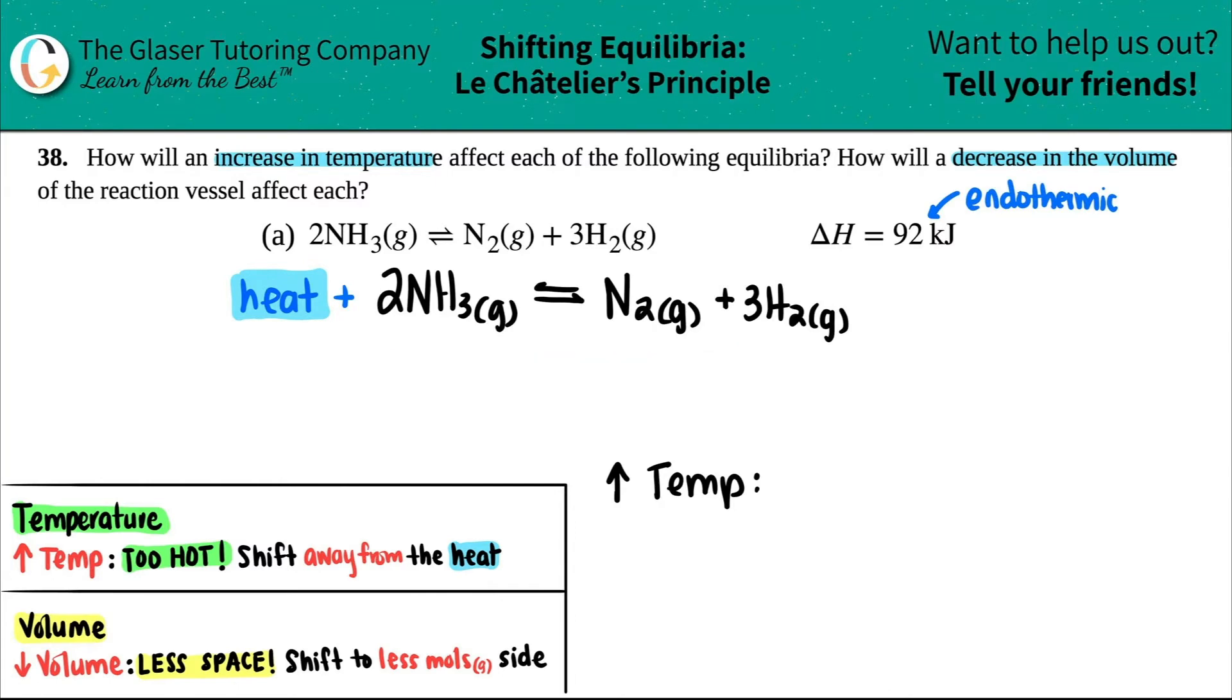If you increase the temp, you will go the forward reaction, which means if we're going this way, all of these will increase and this will drop down. Basically we're going to shift to the right, meaning the products will increase and the reactants will decrease. Almost there guys, now we just need to decrease the volume.